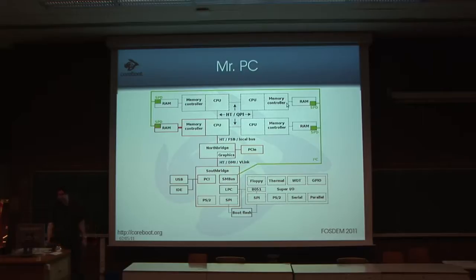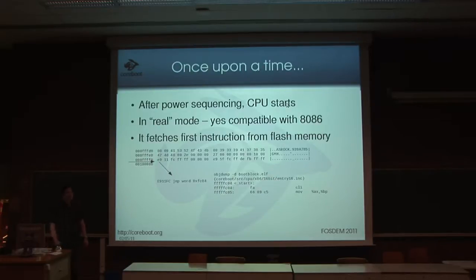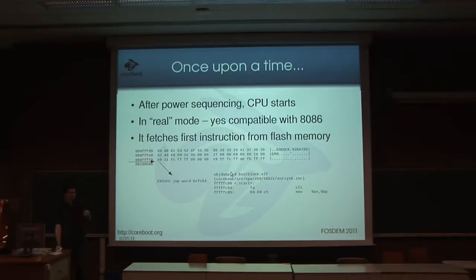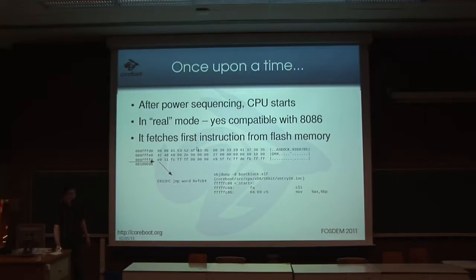Here's a little fairy tale about how to start a computer. When you push the button, at the beginning there is power sequencing — there are many voltage regulators and you must wait until all voltages are at the right levels. Then the CPU gets started and fetches the first instruction, which is 0xE9. This is the dump of the flash chip. If you take out the flash chip, here are the last 16 bytes of it and here is the first instruction. If you decode it, it's a jump to another address.